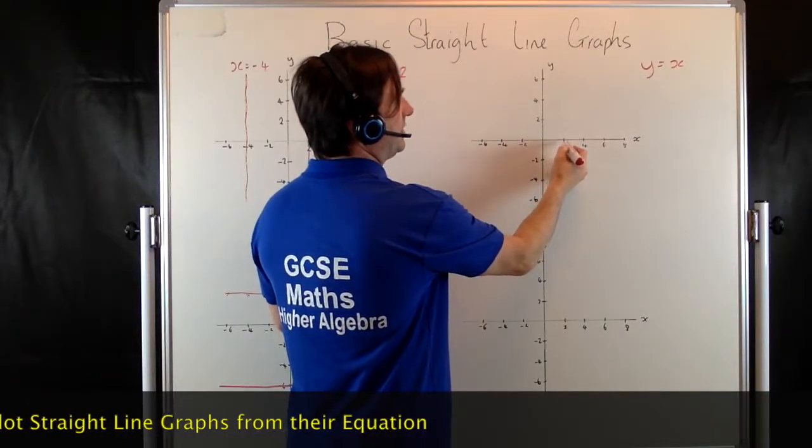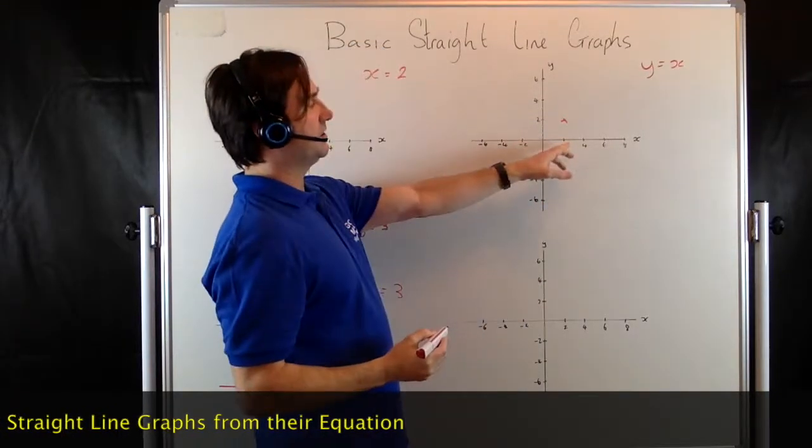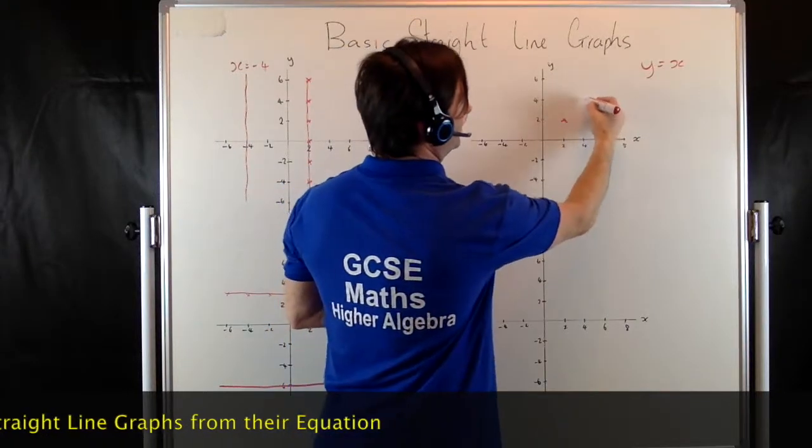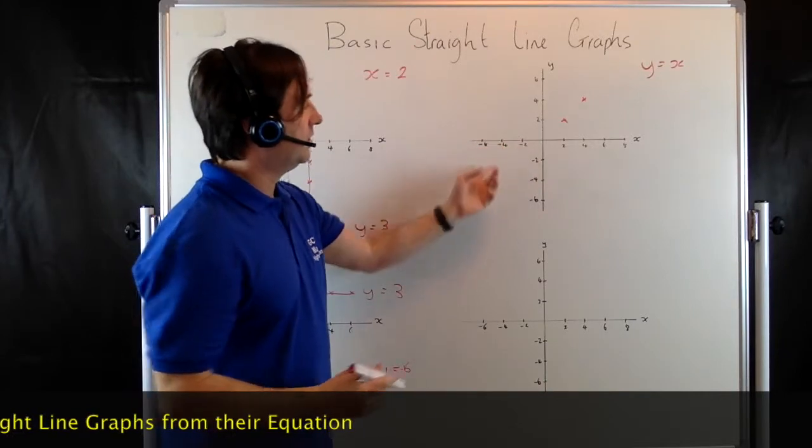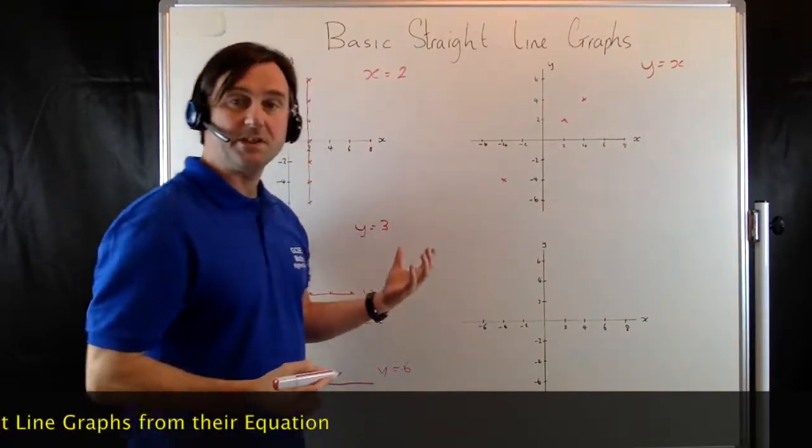But y equals x, well, what it means is whatever x equals, y will equal the same. So when x equals 2, y will equal 2. When x equals 4, for example, y would equal 4. When x equals minus 4, y is going to equal minus 4. They must always be the same.